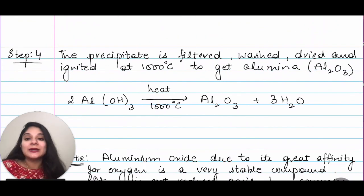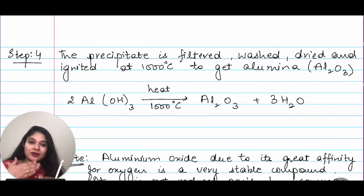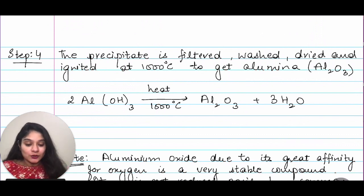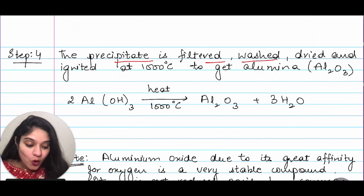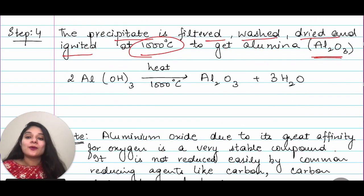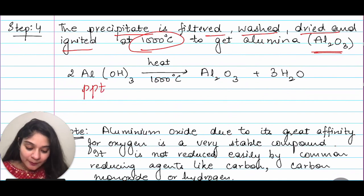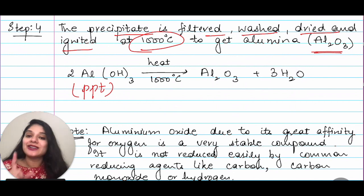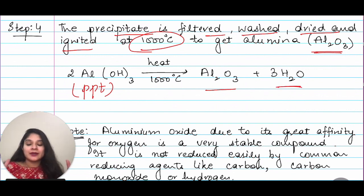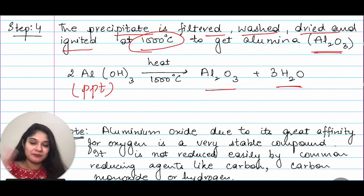Step four: the precipitate is filtered, washed, dried, and ignited at 1000 degrees Celsius to get alumina (Al₂O₃). Al(OH)₃ heated at 1000°C gives Al₂O₃ and water. This is your alumina — the target. You started with bauxite ore and wanted to reach alumina — you have now reached alumina.